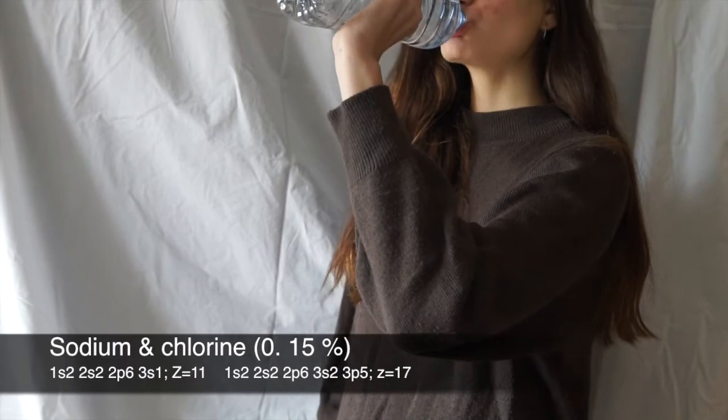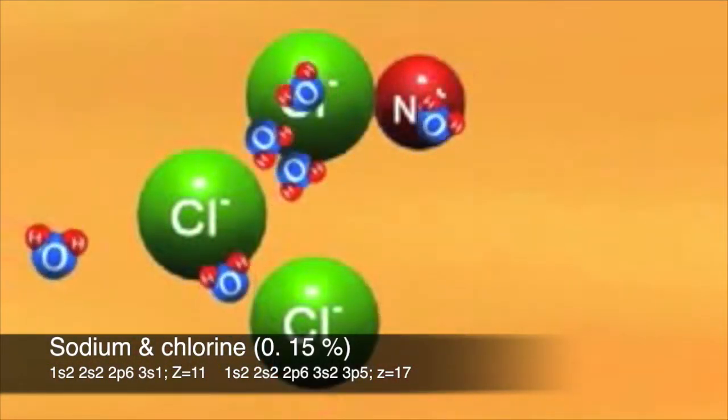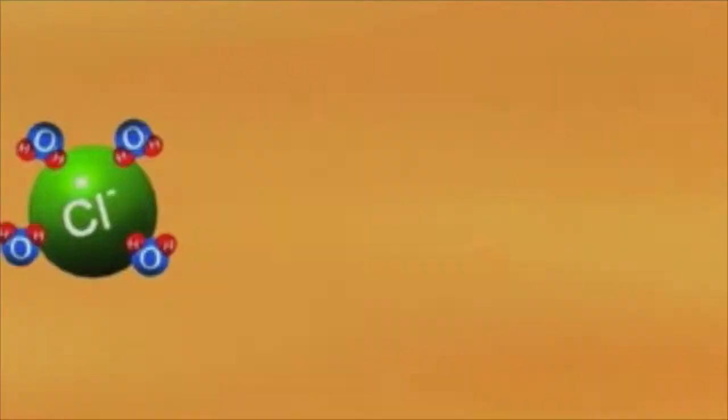Sodium is vital for electrical nerve signaling. Both of them also regulate the amount of water in the body. Chlorine is found as a negative ion.